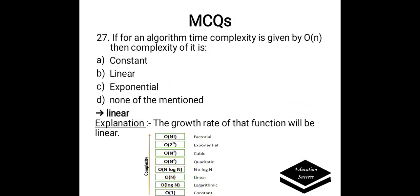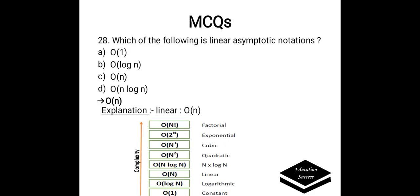If for an algorithm time complexity is given by O(n), then complexity of it is: a) constant, b) linear, c) exponential, or d) none of the mentioned. Correct answer is linear. The growth rate of that function will be linear if the complexity is O(n). Which of the following is a linear asymptotic notation? Answer: O(n) is a linear asymptotic notation.